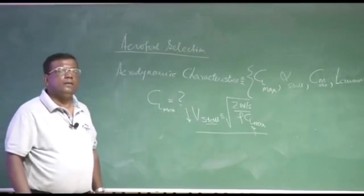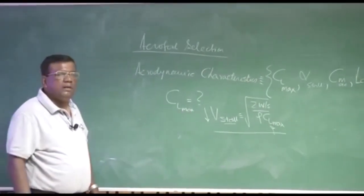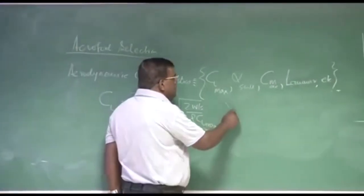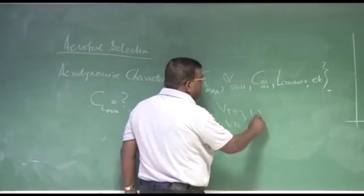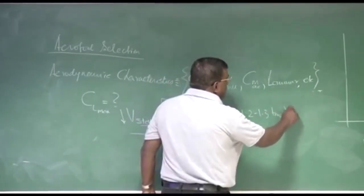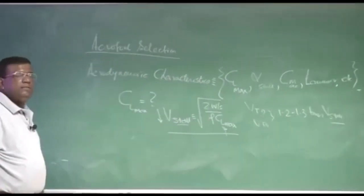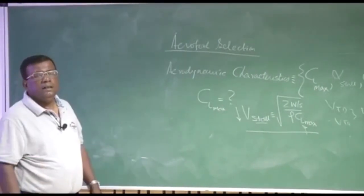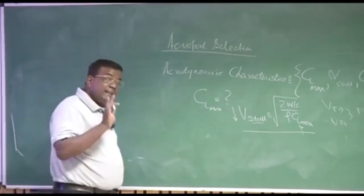A V stall lower has lot of advantages, that is that your engine power requirement reduces and also you know V touchdown or V takeoff, they are almost like 1.2 to 1.3 times V stall. So if V stall is less, then V takeoff and V touchdown is also less. So you have direct implication on the engine power selection. This is another thing for a designer.